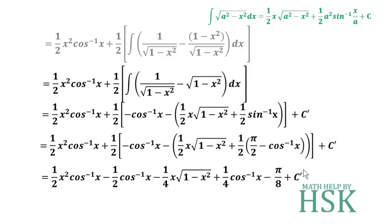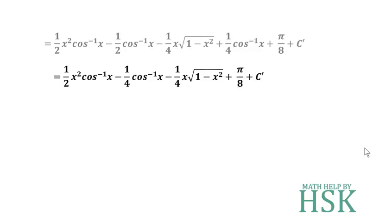The terms −π/8 and C′ are both constants, so together they are replaced by the single integration constant C. Combining the cos⁻¹(x) terms: −(1/2)cos⁻¹(x) + (1/4)cos⁻¹(x) = −(1/4)cos⁻¹(x).